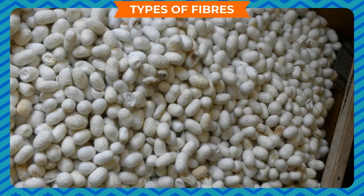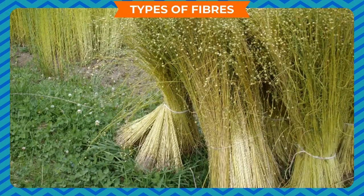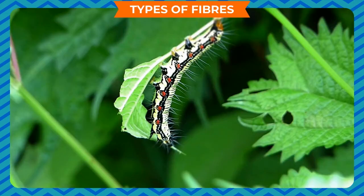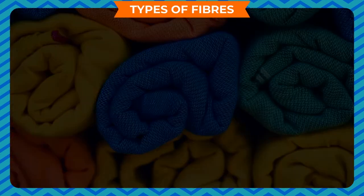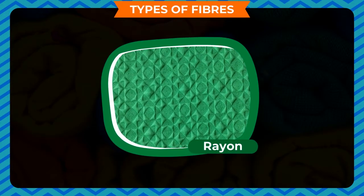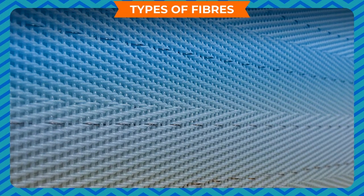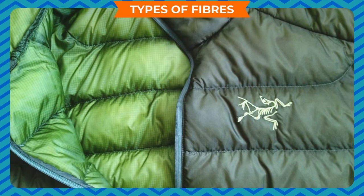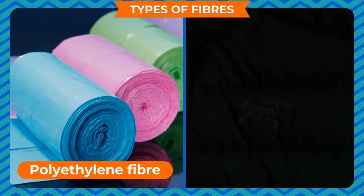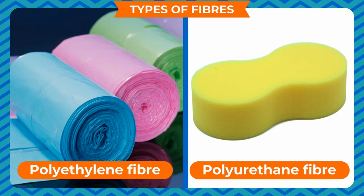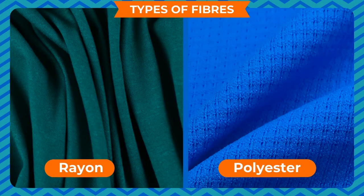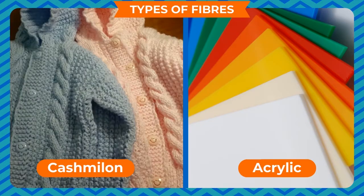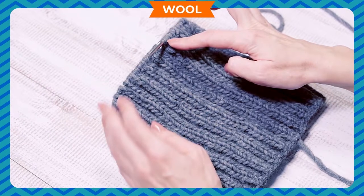Animal fibers include silk and wool. Plant fibers include cotton, flax, jute, and ramie. Man-made fibers such as nylon, polyester, and rayon are produced by chemical reactions rather than occurring naturally. The term synthetic fiber is often used to designate man-made fibers. These fibers are generally classified by the chemical compounds they are made from — for example, polyethylene fiber, polyurethane fiber, etc.